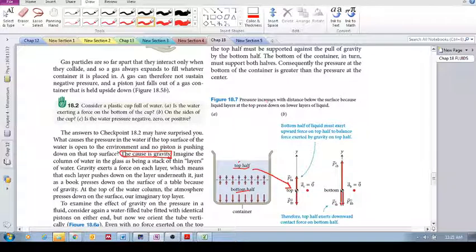It says here, pressure increases with distance below the surface because liquid layers at the top press down on lower layers of liquid.